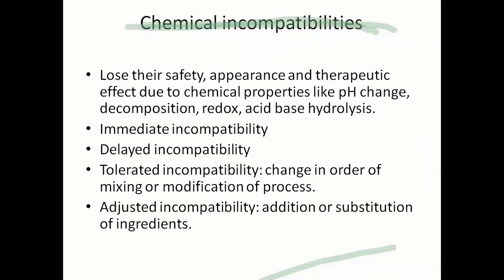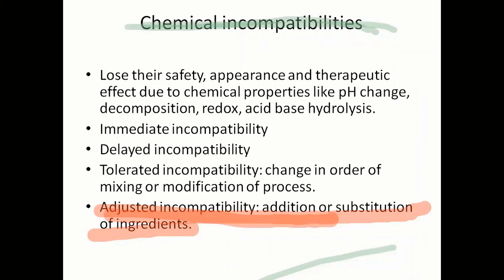Next is tolerated incompatibility. This kind of incompatibility can be overcome by just changing the order of mixing. For example, instead of mixing a particular substance in alcohol first, you mix it in water and then add alcohol — you change the order of mixing. You can also modify the process: if you are going for trituration, instead go for heating, or change to some other process. By just changing the process or the order of mixing, you can overcome that particular incompatibility — that is known as tolerated incompatibility.